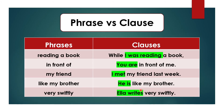'He is like my brother' — 'he' is the subject and 'is' is the verb. As mentioned earlier, when there is no main verb in the clause, the auxiliary verb works as the main verb, so 'is' is the main verb here. This is a clause. 'Very swiftly' — a group of words without any proper meaning and without subject-verb combination, so this is a phrase. 'Ella writes very swiftly' — 'Ella' is the subject and 'writes' is the verb, expressing full meaning and a group of words, so this is a clause.